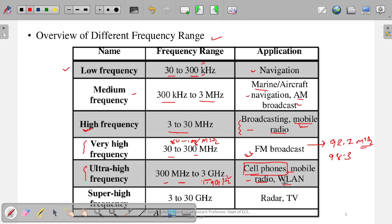WLAN means your Wi-Fi modems and mobile hotspots — those use this frequency range. Wi-Fi basically uses 2.4 gigahertz. Nowadays in 5G communication, the 5 gigahertz frequency band is also used. Bluetooth also falls within this ultra high frequency range.